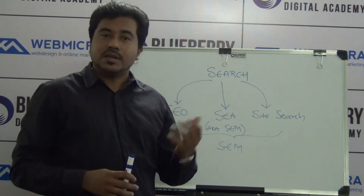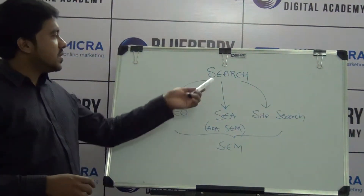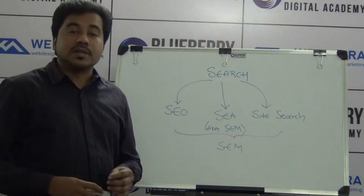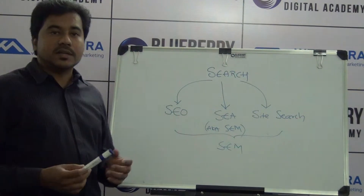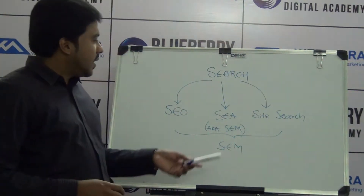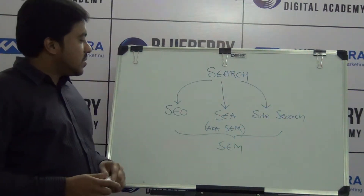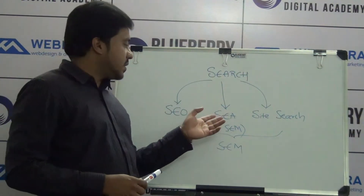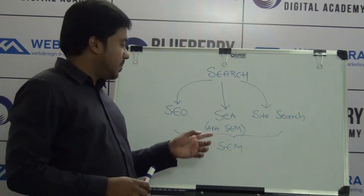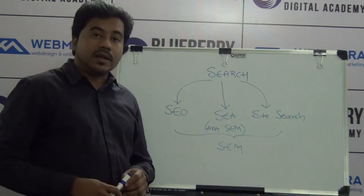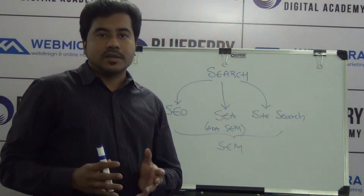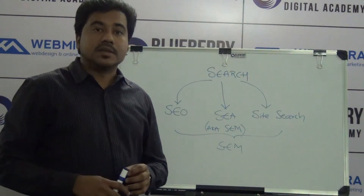Different types of search — let's see what it is. Search is categorized into SEO, search engine optimization, also known as organic search. And there is another categorization: search engine advertising. Predominantly in the world of online advertising, search engine advertising today is known as search engine marketing.